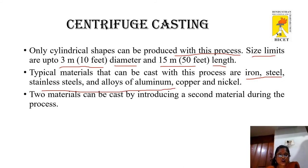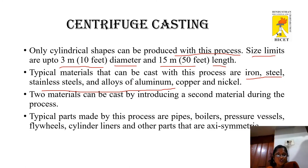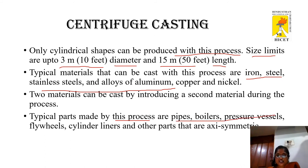Two different materials can also be cast by introducing a second material during the process. Typical parts made by this process include pipes, boilers, pressure vessels, flywheels, cylindrical liners, and other axisymmetric parts.